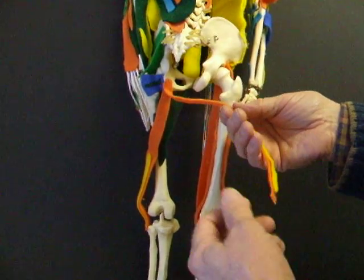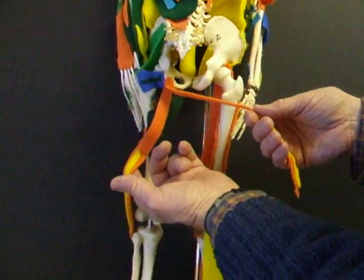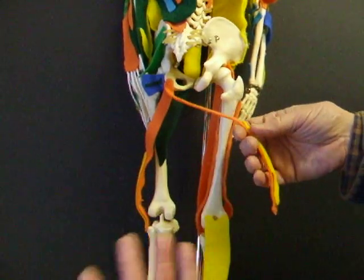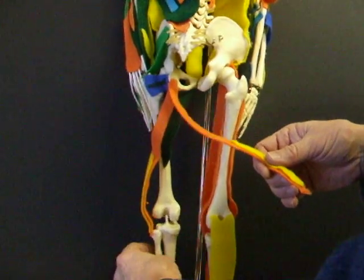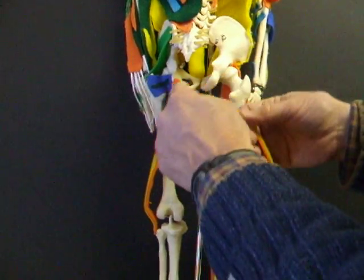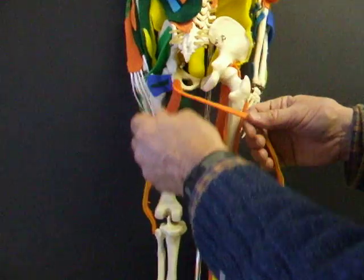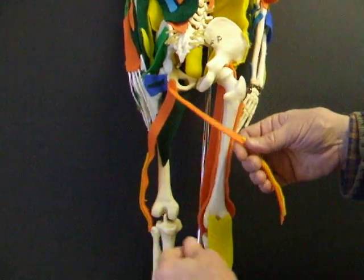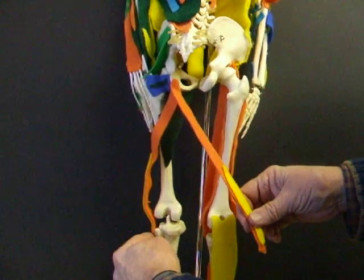The other of the three hamstrings is the biceps femoris, which I don't have you attaching necessarily, but I do want you to put one of the hamstrings on the skeleton. This one goes from the ischial tuberosity, just like the biceps femoris, but instead of going laterally to the fibula...